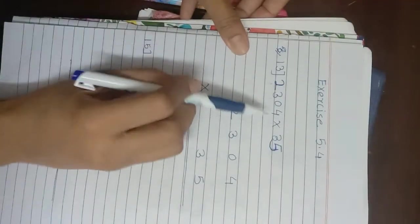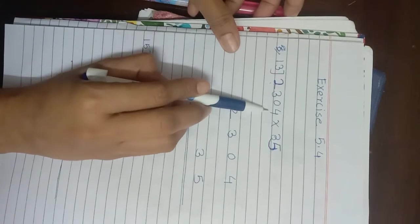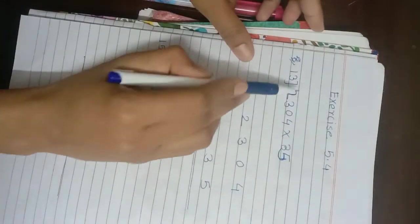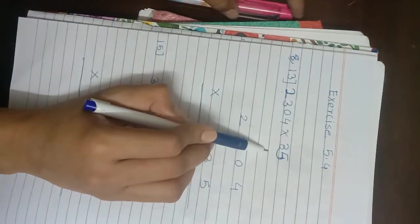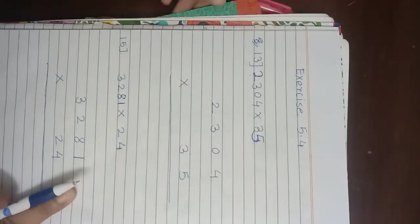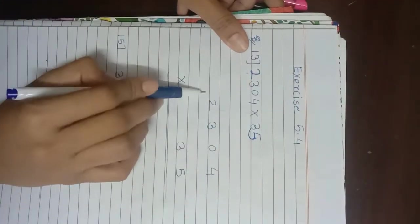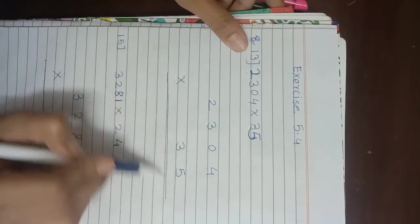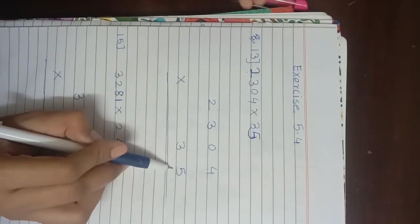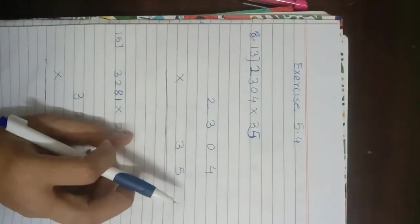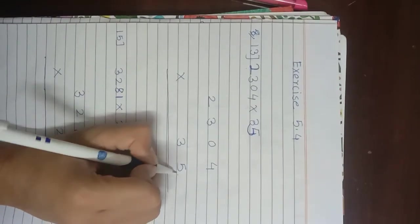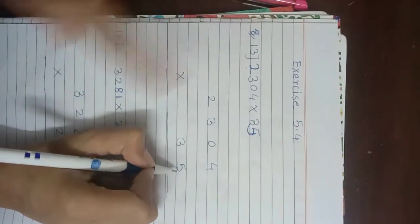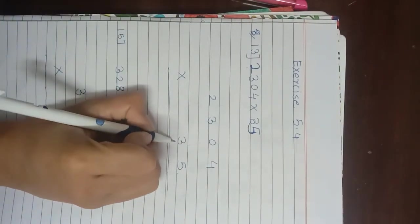Question number 13: we have to multiply 2304 by 35. Here 2304 is the multiplicand and 35 is the multiplier. We will use the column method — the multiplicand is written on top, then the multiplication sign, and then the multiplier.